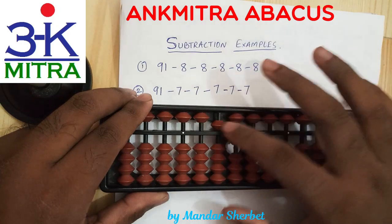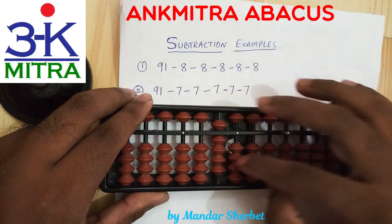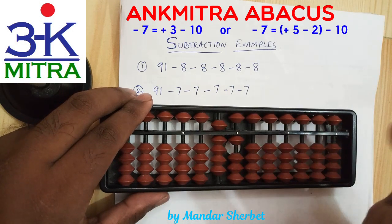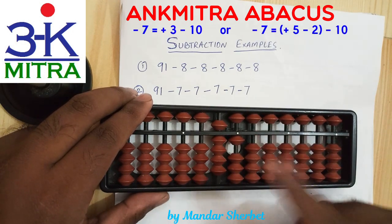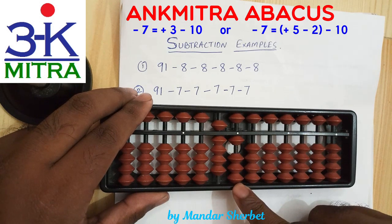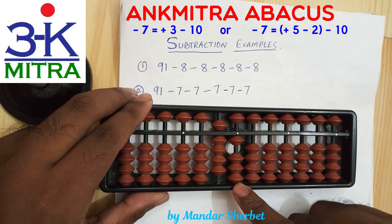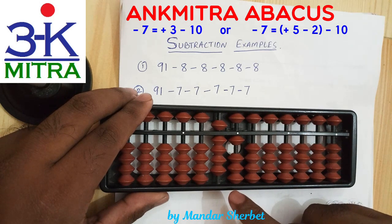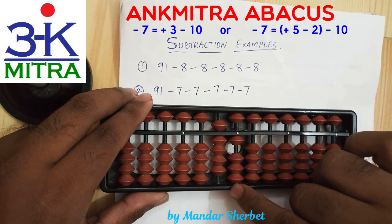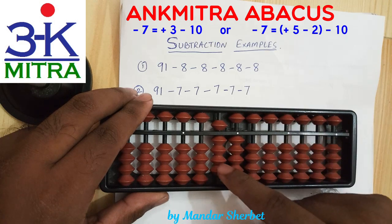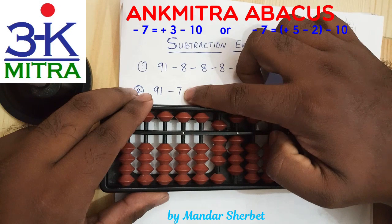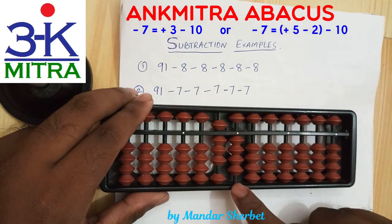Moving to the second example, I'll start with 91 again. While subtracting 7, do we have 7 beads available? No. So we find the big friend of 7, which is 3. Our regular big friend formula is plus 3 minus 10. Plus 3 can be done here, then minus 10 on the next left rod. The subtraction of the first 7 is done.